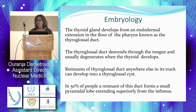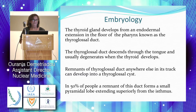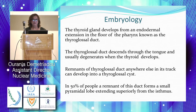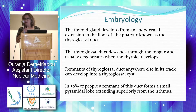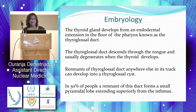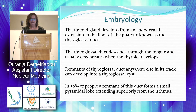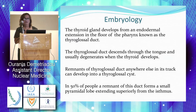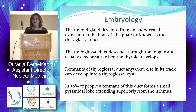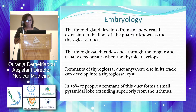Let's start with the embryology, just to remind you that the thyroid gland develops from the endodermal extension of the floor of the pharynx, known as the thyroglossal duct. It descends through the neck and usually degenerates and then the thyroid develops. Sometimes we can have a remnant of that and we can see it as a thyroglossal cyst or as a pyramidal lobe.